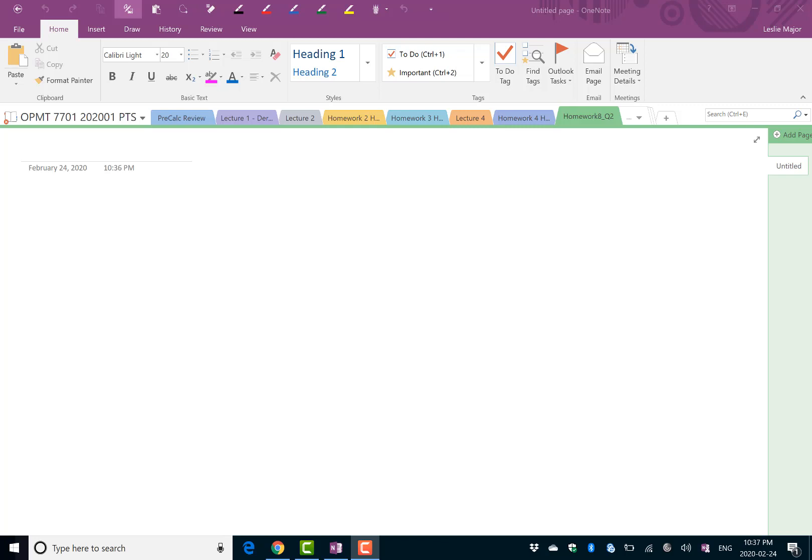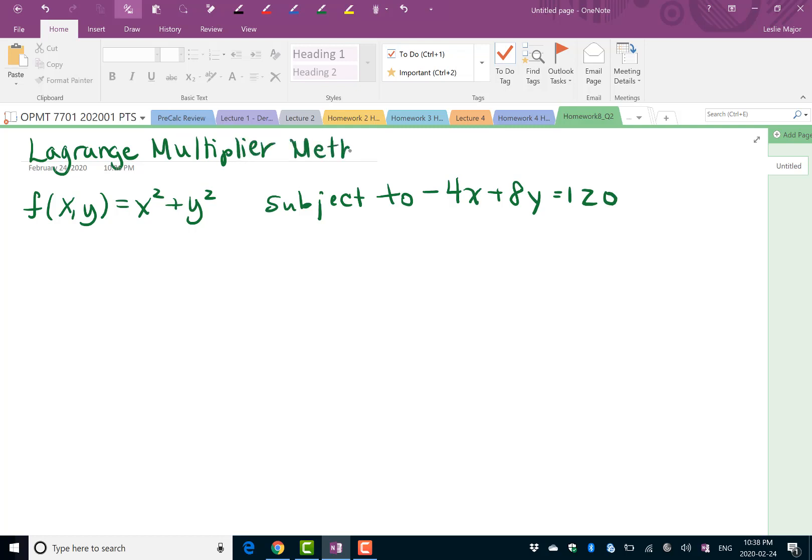In this video we're going to talk about the Lagrange method to maximize the following function: f(x,y) equals x squared plus y squared, subject to the constraint negative 4x plus 8y equals 120. We're going to maximize this f of x function.